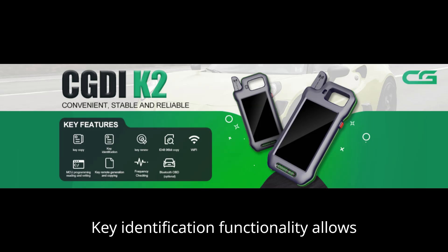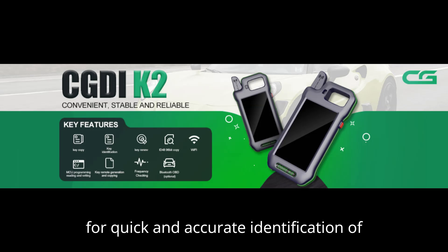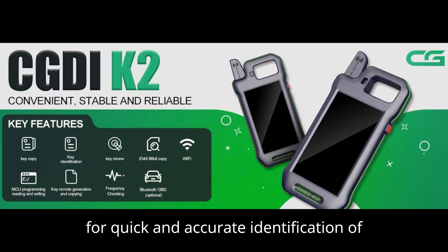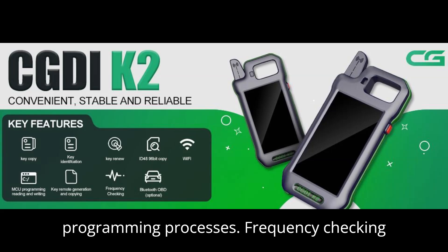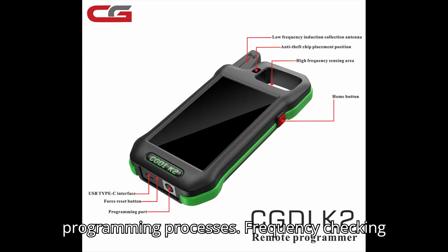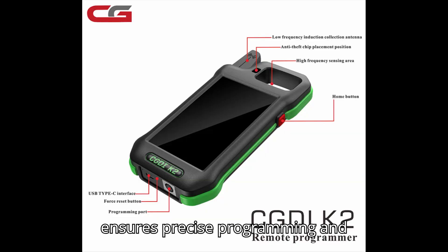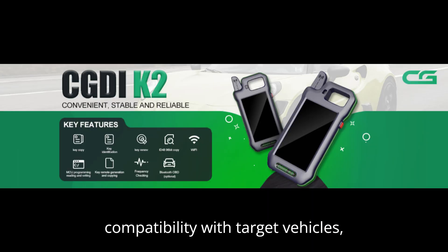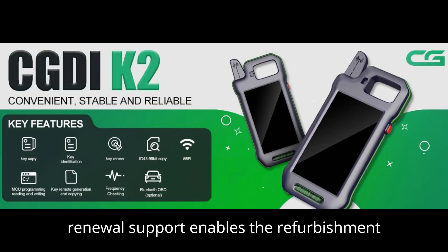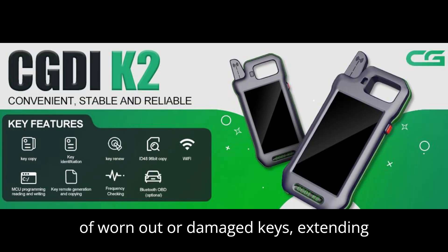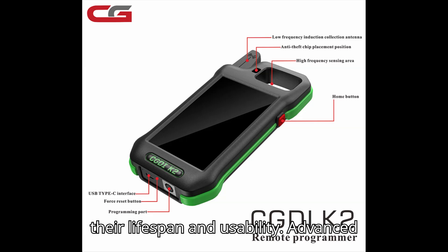Key identification functionality allows for quick and accurate identification of keys, streamlining the duplication and programming processes. Frequency checking ensures precise programming and compatibility with target vehicles, enhancing efficiency and accuracy. Key renewal support enables the refurbishment of worn-out or damaged keys, extending their lifespan and usability.